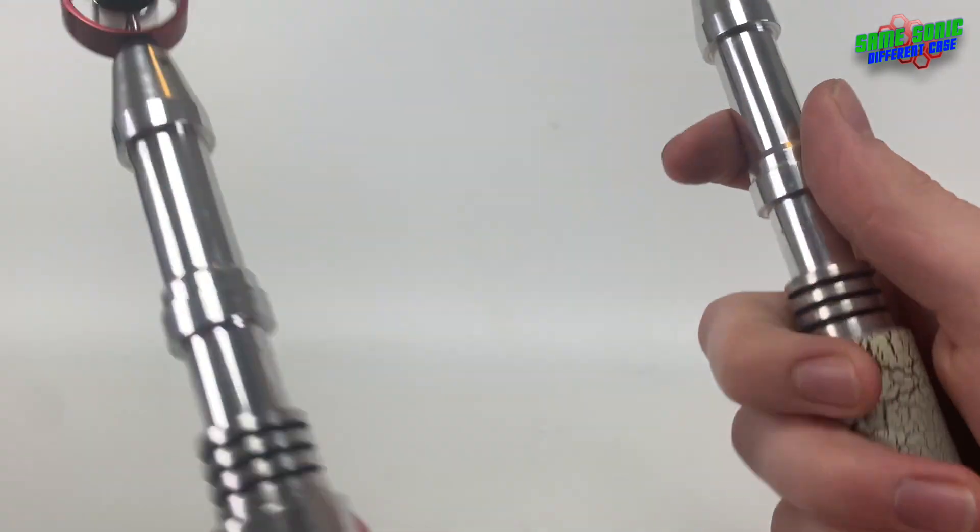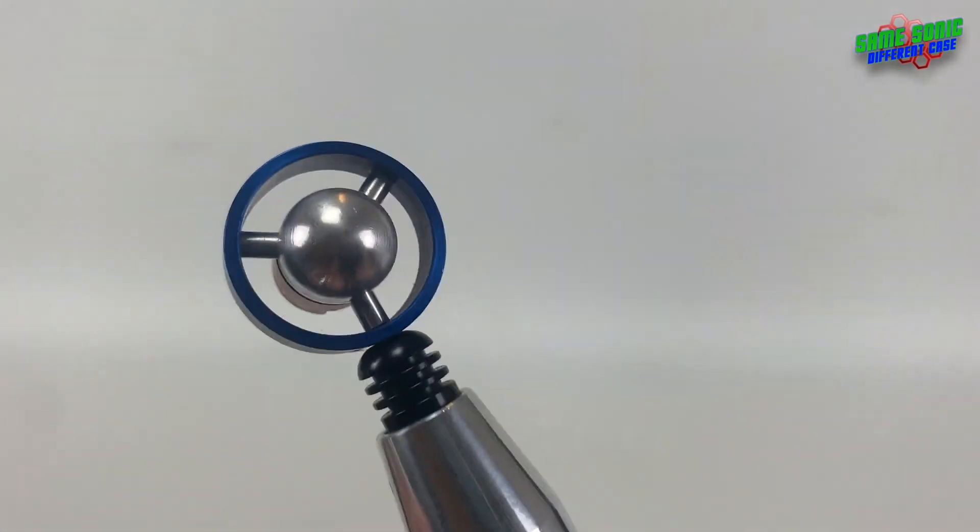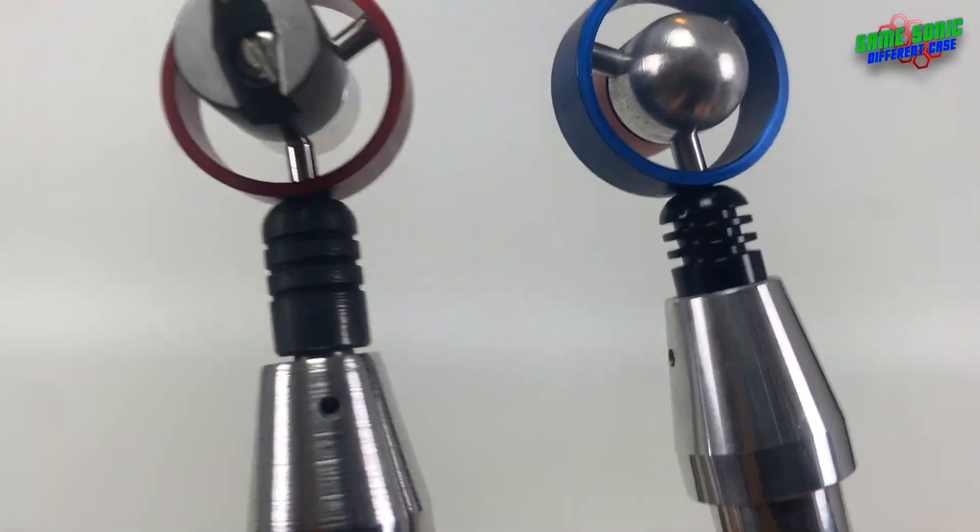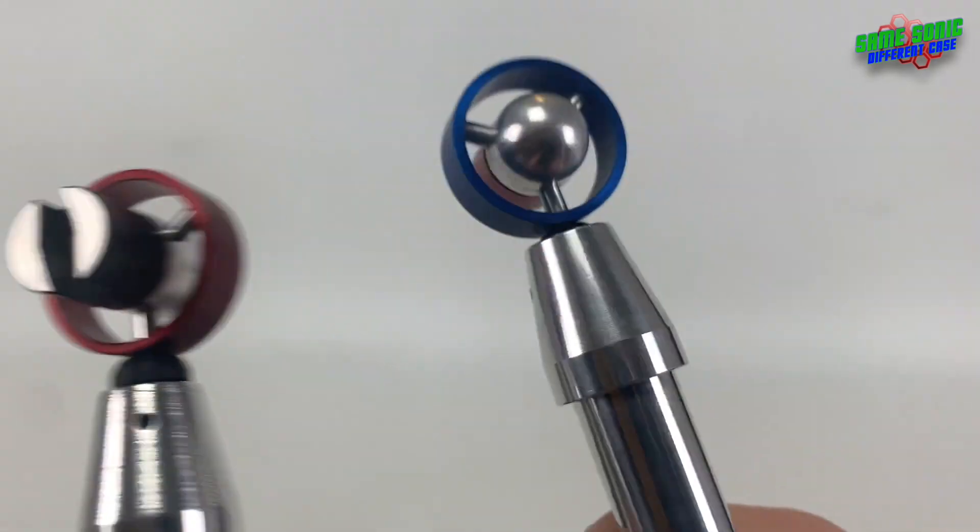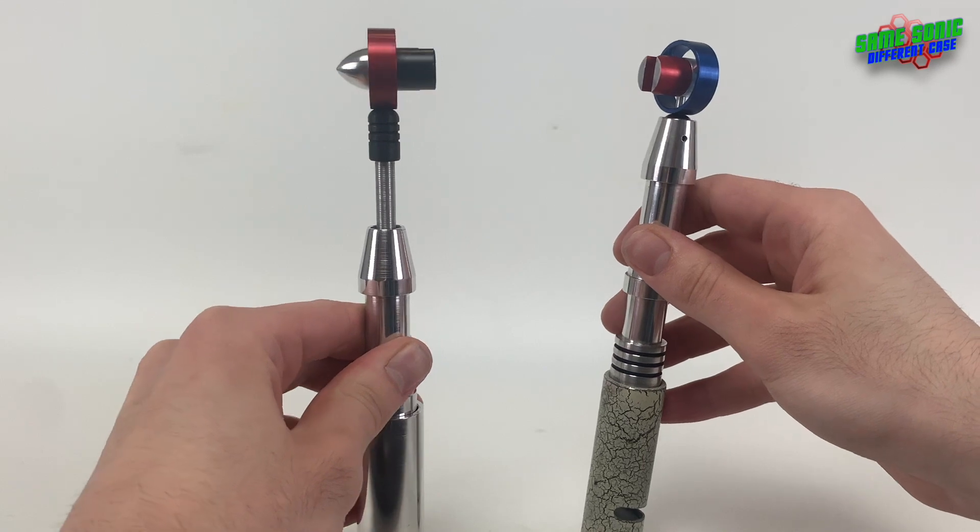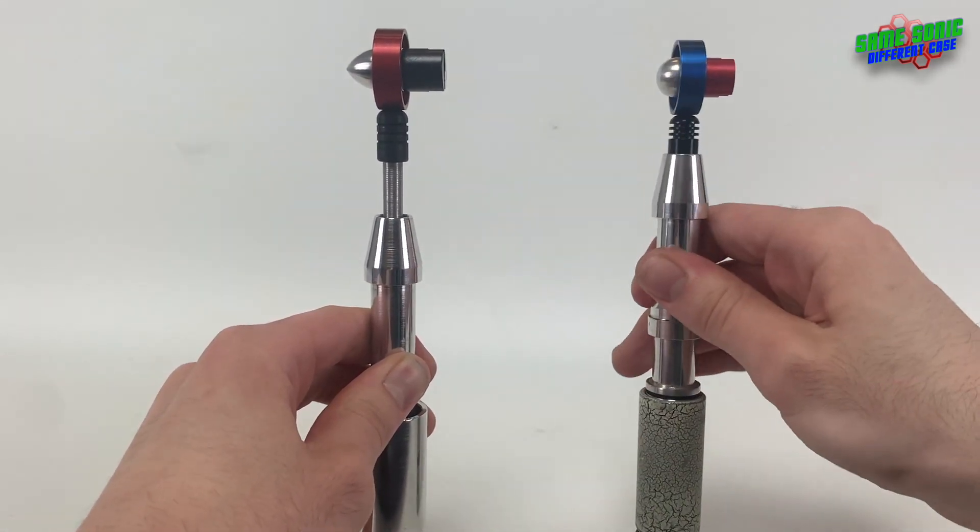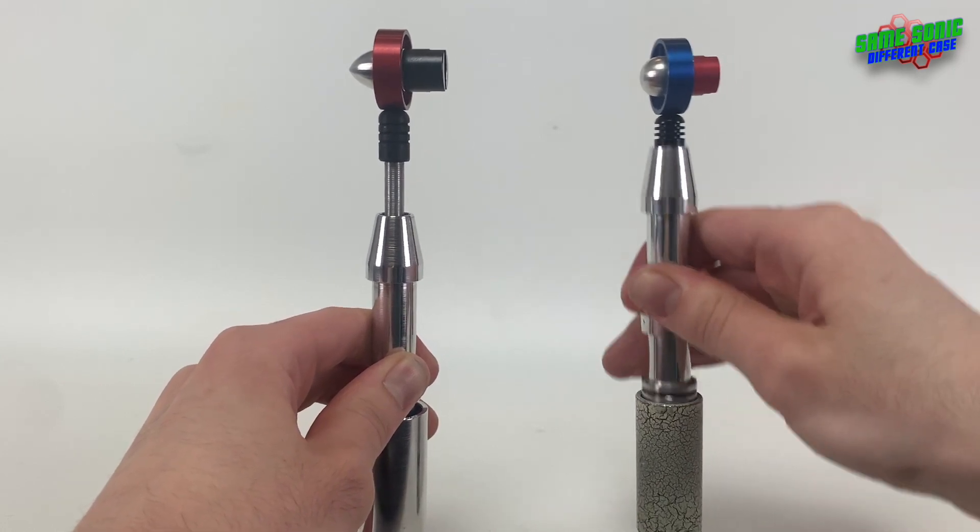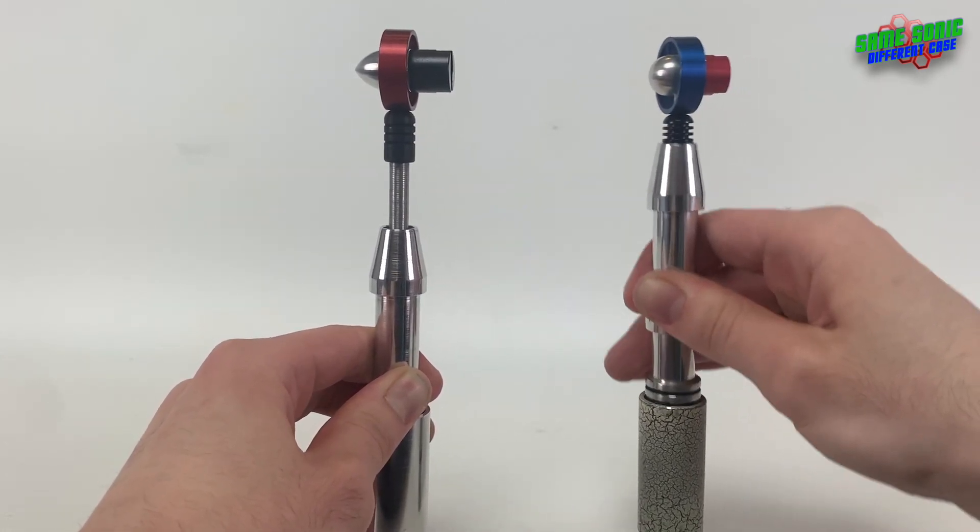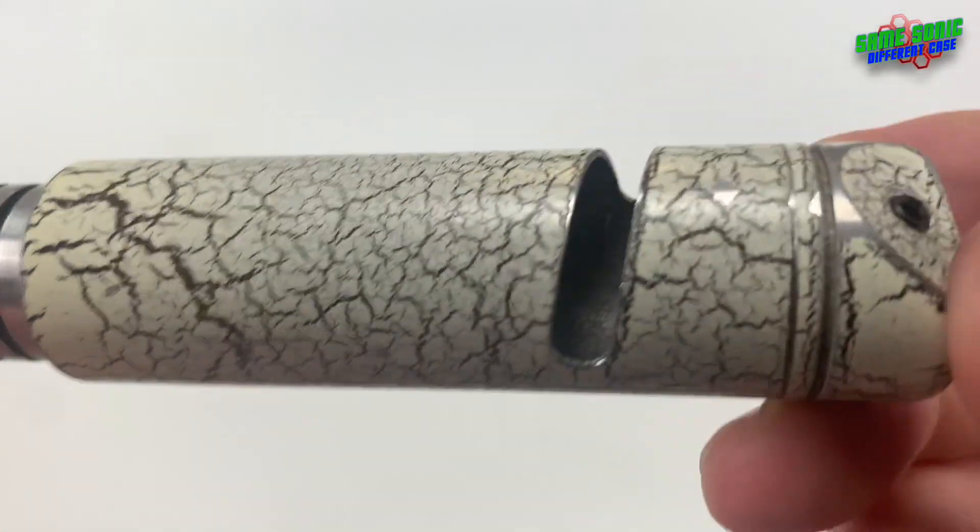But also you can see the, this bit's a lot more glossy, the black section, whereas on here, it's a bit more matte, and you can also see the spring, how far down this one goes, compared to the older release, which is, that's about as far as it goes, it's not very far down really.